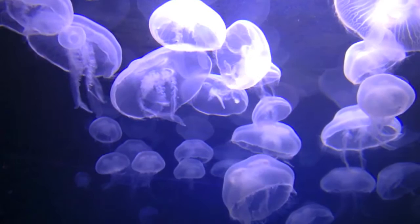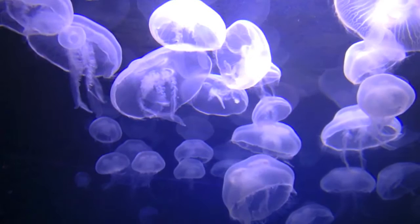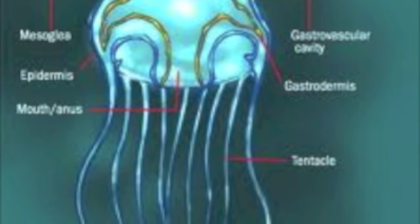This mouth directly opens into a gastrovascular cavity, which serves as a stomach where the food is digested. Most jellyfish drift in the ocean, with their tentacles spread out to gather food.